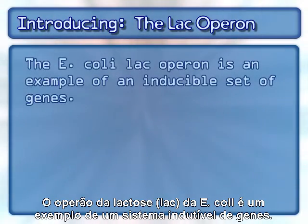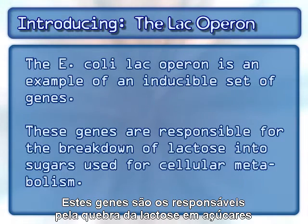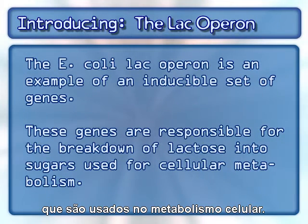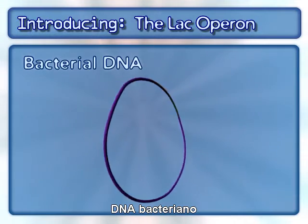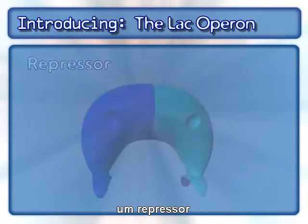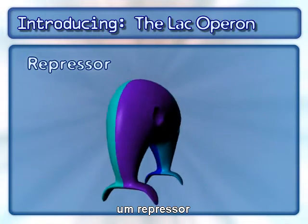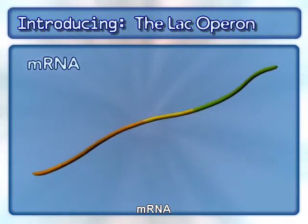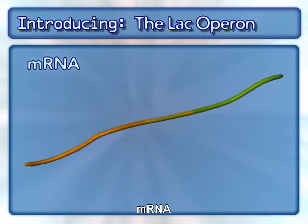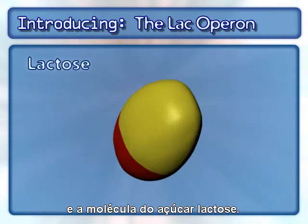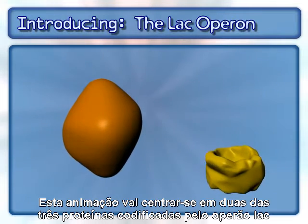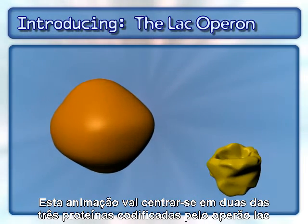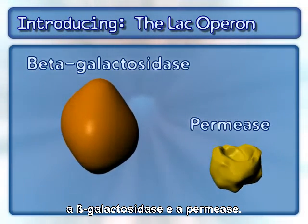The E. coli lac operon is an example of an inducible set of genes. These genes are responsible for the breakdown of lactose into sugars used for cellular metabolism. This inducible system also involves bacterial DNA, a repressor, mRNA, and the sugar molecule lactose. This animation will only focus on two of the three proteins encoded by the lac operon: beta-galactosidase and permease.